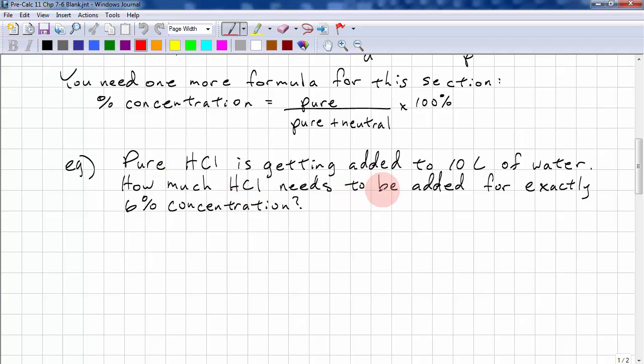Pure hydrochloric acid is getting added to 10 liters of water. How much hydrochloric acid needs to be added for exactly a 6% concentration? So let V be the volume of hydrochloric acid, the pure hydrochloric acid. Then we have 6, because we have 6%, equals 100 times the volume of the pure hydrochloric acid. And the volume of the pure hydrochloric acid getting added to the neutral substance, 10 liters of water.